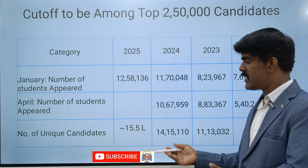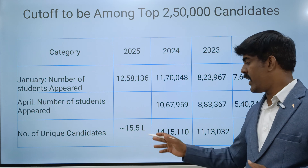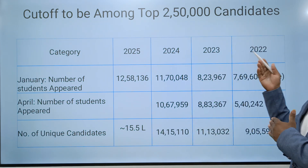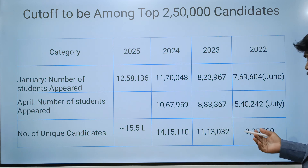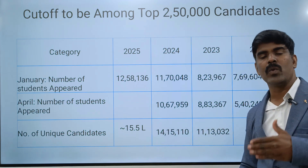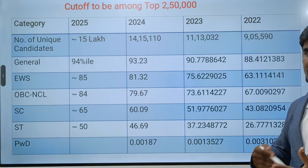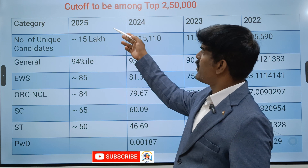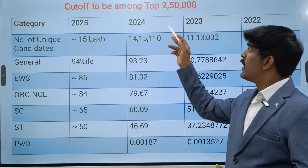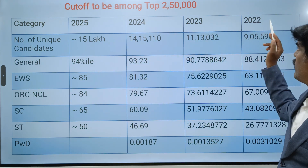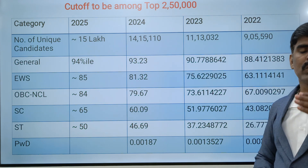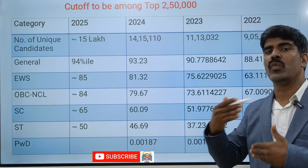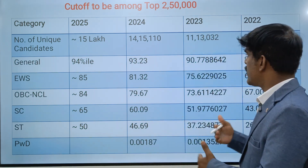The total student strength has grown year on year: approximately 9 lakhs in 2022, 11 lakhs in 2023, 14 lakhs in 2024, and around 15.5 lakhs in 2025. Students are increasing every year. Looking at this category-wise over the last 4 to 5 years, we can do a complete cutoff analysis for each category.